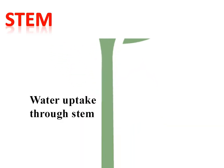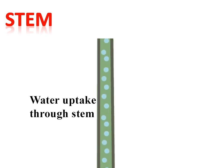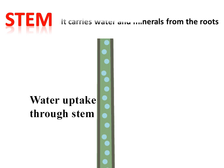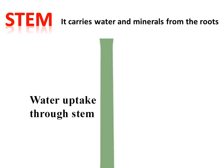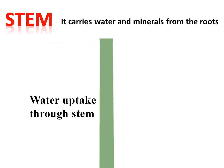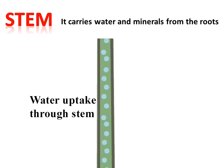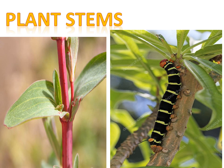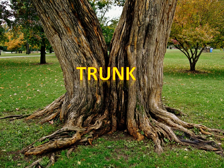The second part is the stem. The stem supports the plant so it gets lots of light. It carries water and minerals from the roots to the different parts of the plant. Both plant stems shown here have different colors and different sizes. Plant stems support the flowers and the fruits.